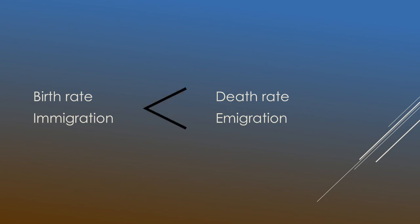Now let's take the opposite scenario. If the death rate and the rate of emigration are larger than the birth rate and the rate of immigration, that means more people are dying and more people are leaving a population than are being born or entering. This will lead to the population size decreasing, as there is a clear pattern of people dying and leaving the population.